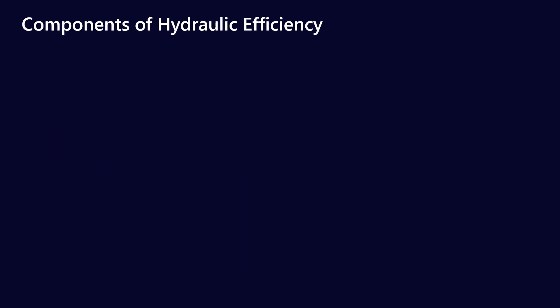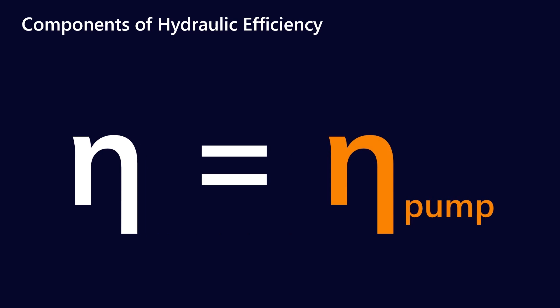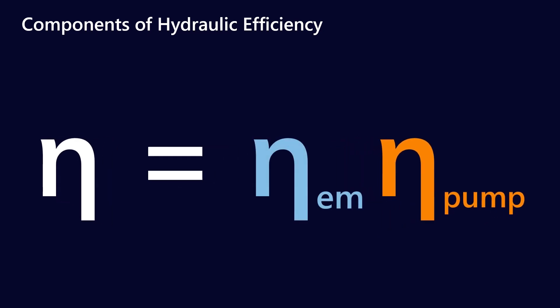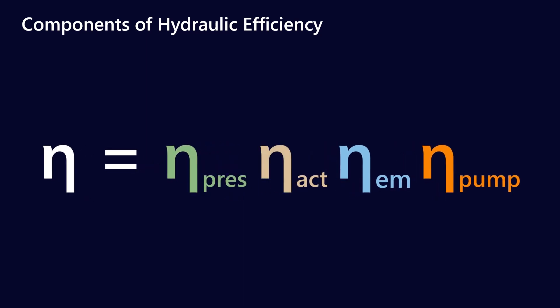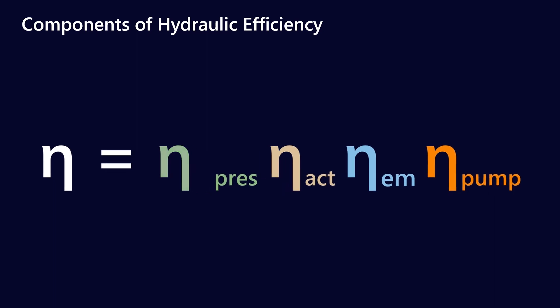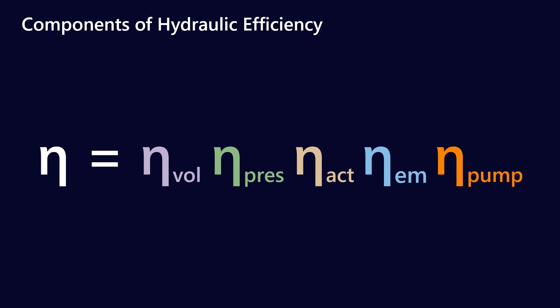Most of the time when we talk about any efficiency term we've represented it by this Greek letter eta. In hydraulic packs, first we have to consider the mechanical efficiency of the pump, which is probably driven by an electric motor so there's some inefficiencies there. Then we've got the losses due to the actuators in the hydraulic pack, and then we have how much the pressure translates through the system as well as how much the volume translates through the system. One of the dominant terms when it comes to hydraulic efficiency is actually the mechanical efficiency or the overall efficiency of the pump.